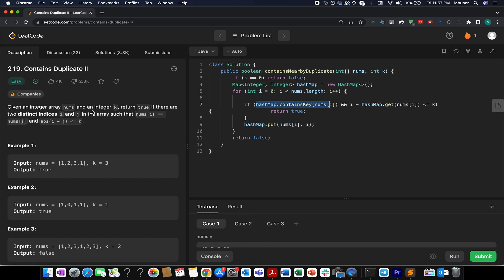If it does exist, that means our first condition is met. Now it's time to check for the second condition. And i minus whatever index is returned from hashmap.get(nums[i]), this simply returns the jth index. If i minus j is less than or equal to k, we simply abort the process and return true.